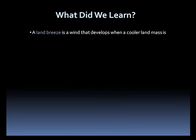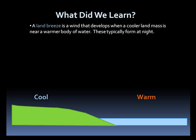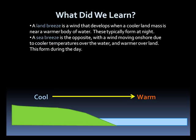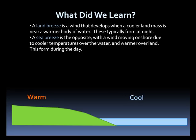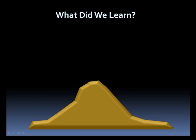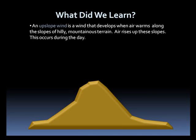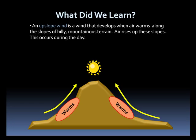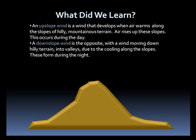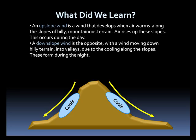A land breeze, also known as an offshore flow, is a wind that develops when a cooler land mass is near a warm body of water — these typically develop at night. A sea breeze, also referred to as an onshore flow, develops when the land is warmer than the cooler water, and warms during the day. An upslope wind develops when air warms along the sides of hilly or mountainous terrain and rises up the slopes during the day. Downslope winds are the opposite, developing at night as the slopes cool and air wants to flow downhill.